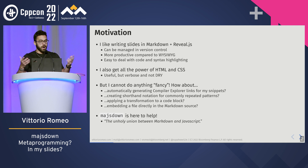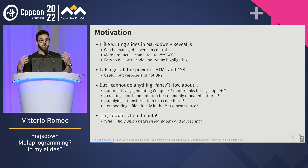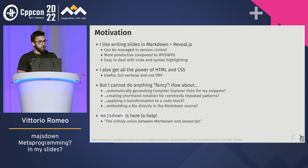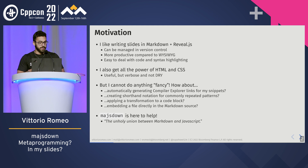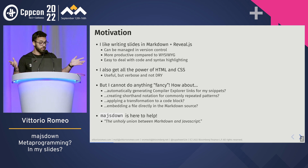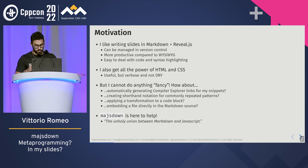But I want more power. I want to do fancy things. For example, I would like to automatically generate a Compiler Explorer link from my code snippet, create short annotation macros for commonly reused patterns in my slides, transform some code blocks, and embed a file directly into Markdown. And I made this thing — it's called matjsdown. I don't know how to pronounce it yet. It's the unholy union between Markdown and JavaScript.